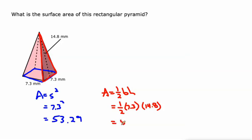I'll just punch that into my calculator: 0.5 times 7.3 times 14.8, and that is 54.02. So what about surface area? The surface area is the sum of all the sides' areas, so we've got that 53.29 on the bottom.